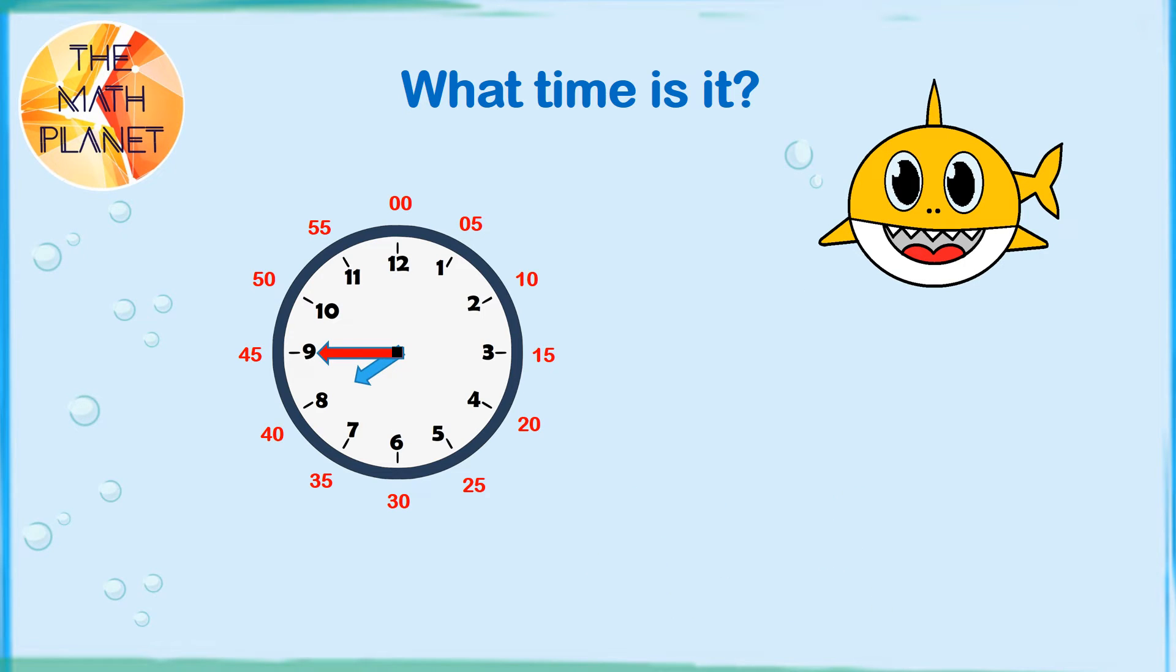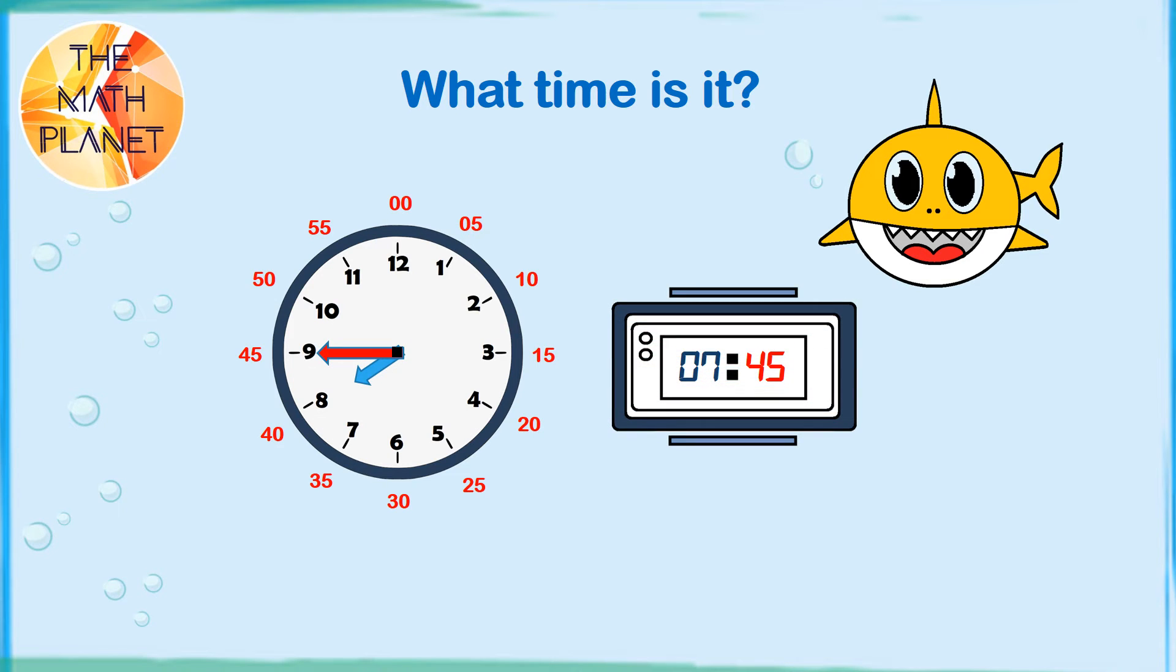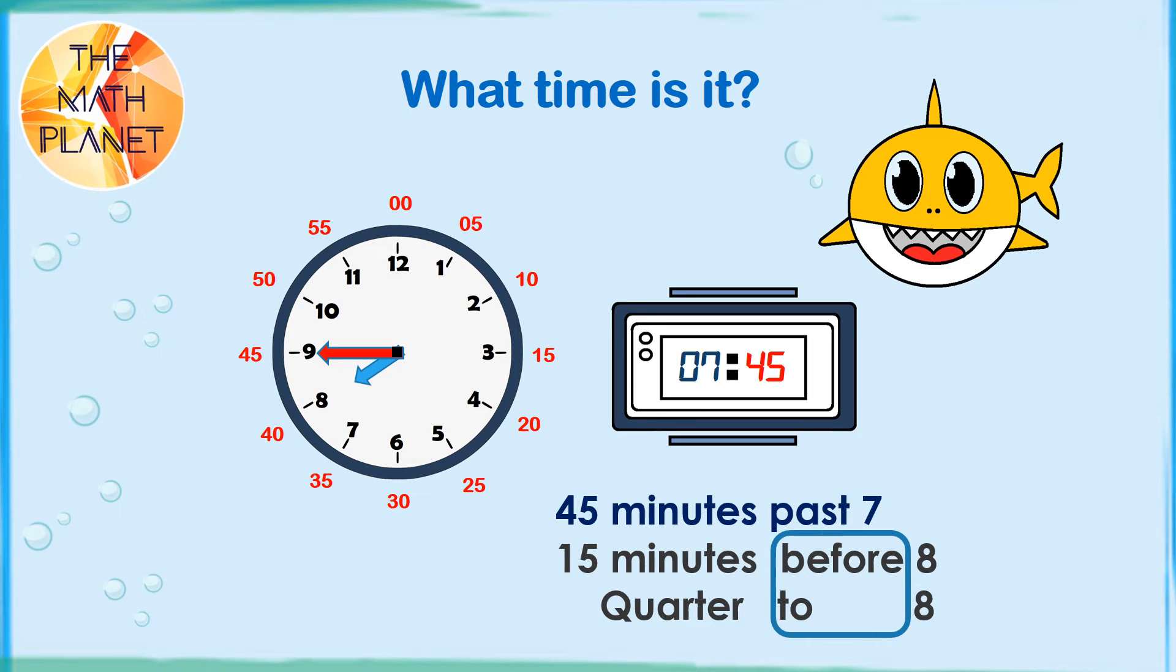What time is it? The hour's hand points between 7 and 8 while the minute's hand points to 9. So, it's 7.45. Let's criss-cross and say it in words. It's 45 minutes past 7. Or, we can say it's 15 minutes before 8. Or, it's quarter to 8. So, when telling the time, before and to have the same meaning. Also, 15 minutes is equal to a quarter of an hour.